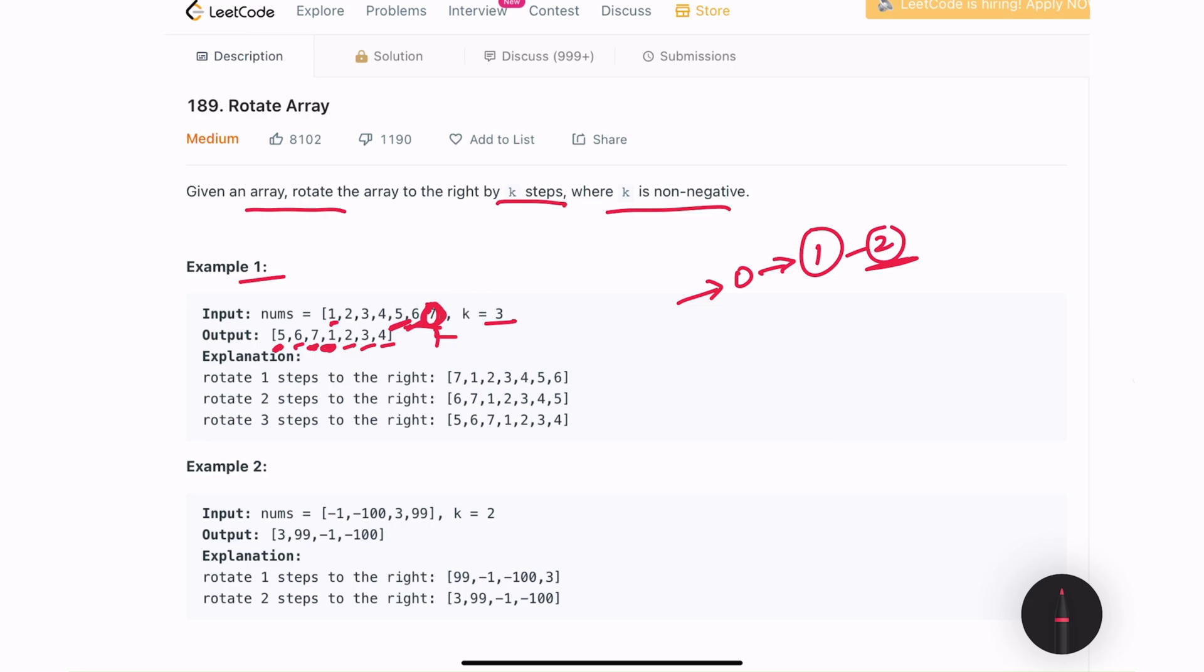This problem can easily be solved with a time complexity of O(n) and space complexity of O(n) too. Because you can create a new array, keep moving all of the elements from this array to the newer one and solve it. But the challenging part over here is to solve it with O(n) time complexity and O(1) space complexity. So without building a new array, we need to modify the input array and return the results. So without wasting any time, let's switch to whiteboard and start discussing.